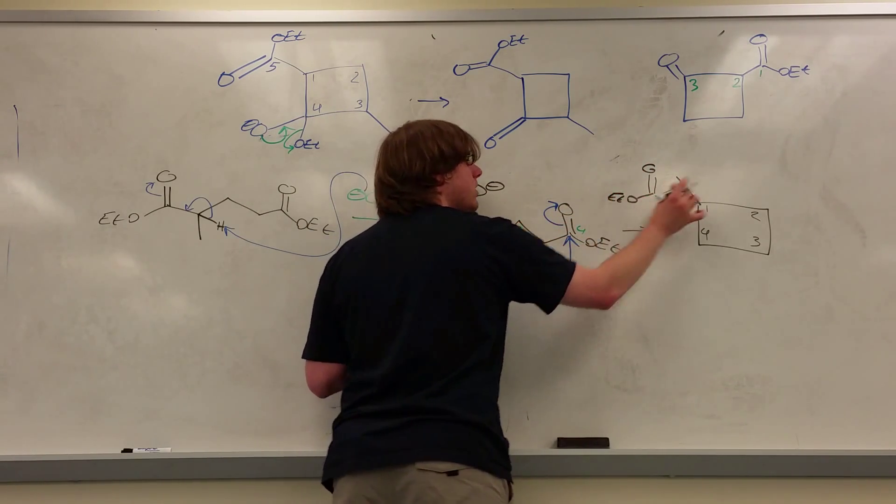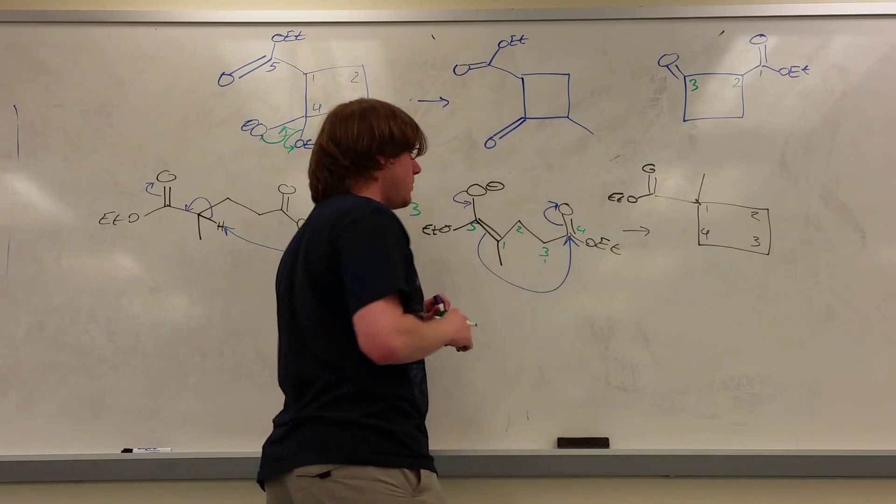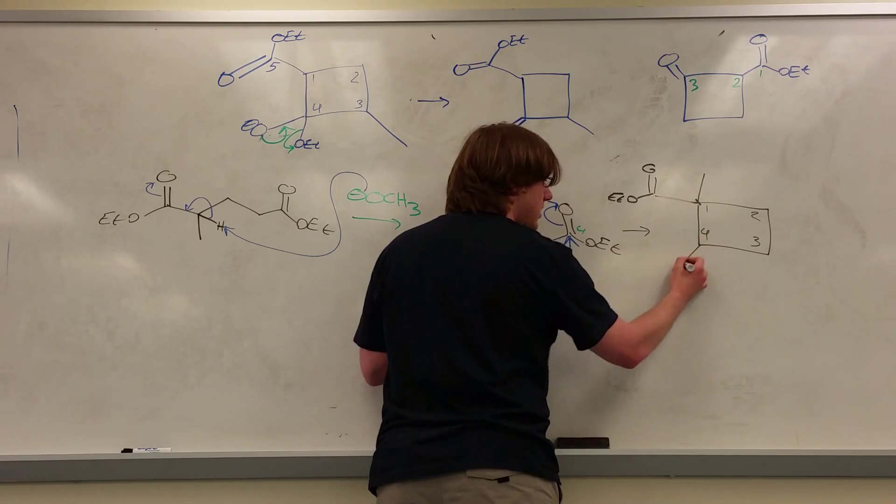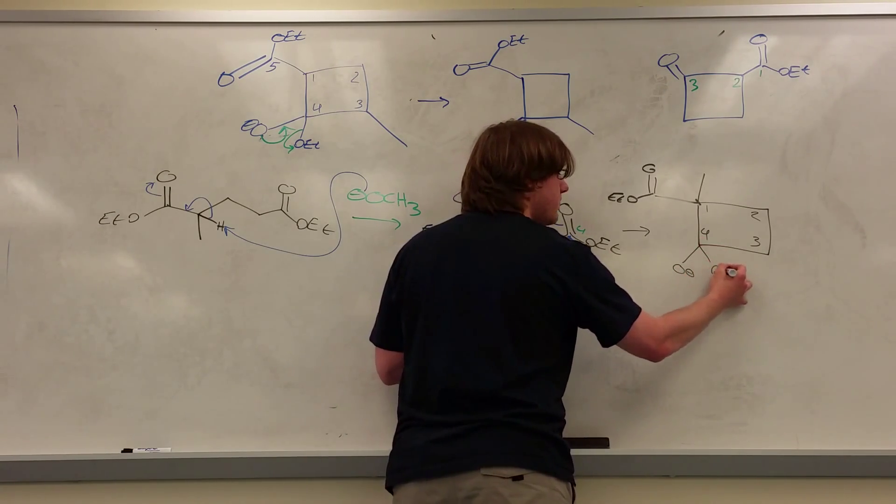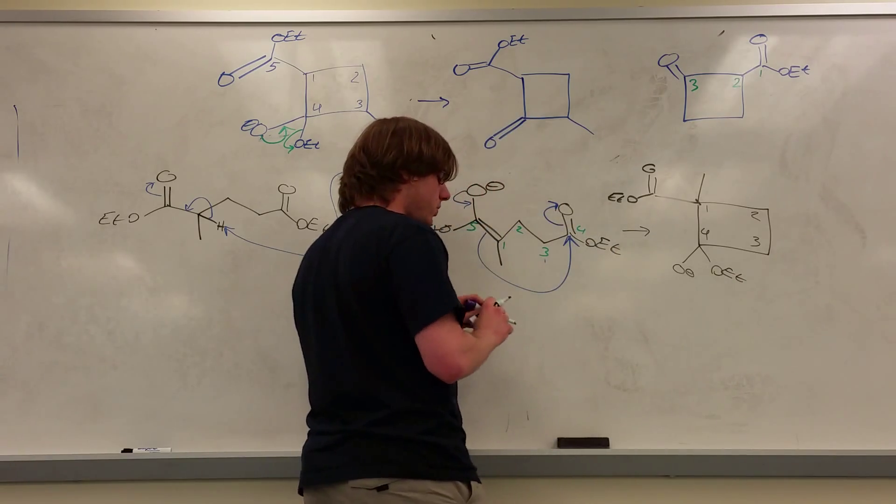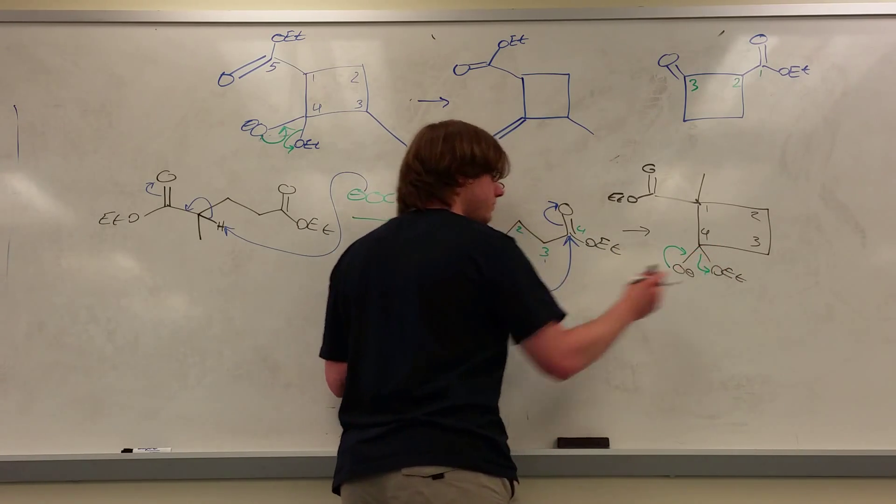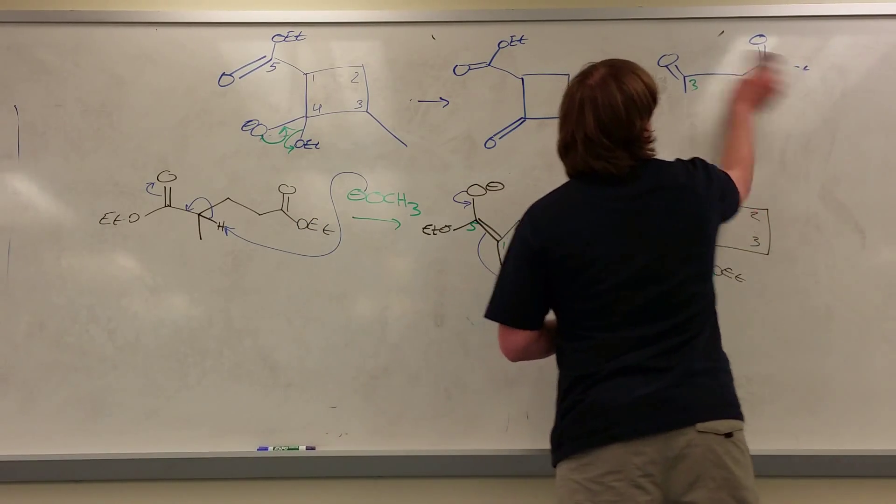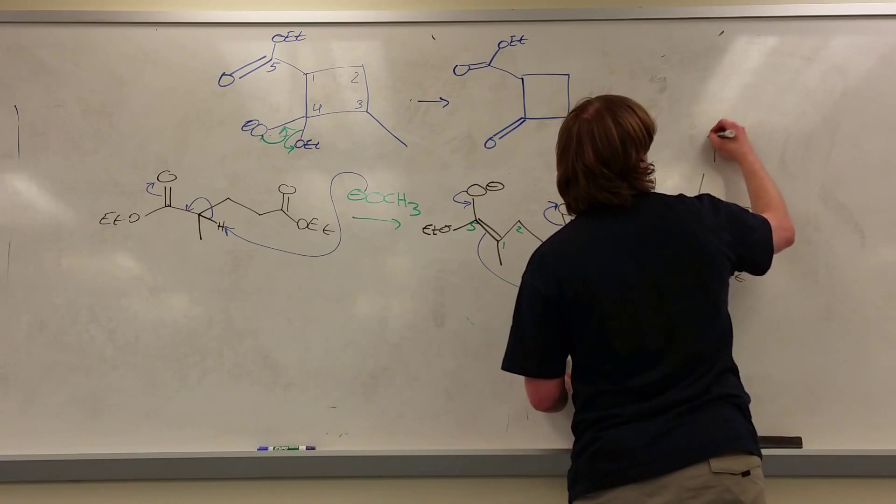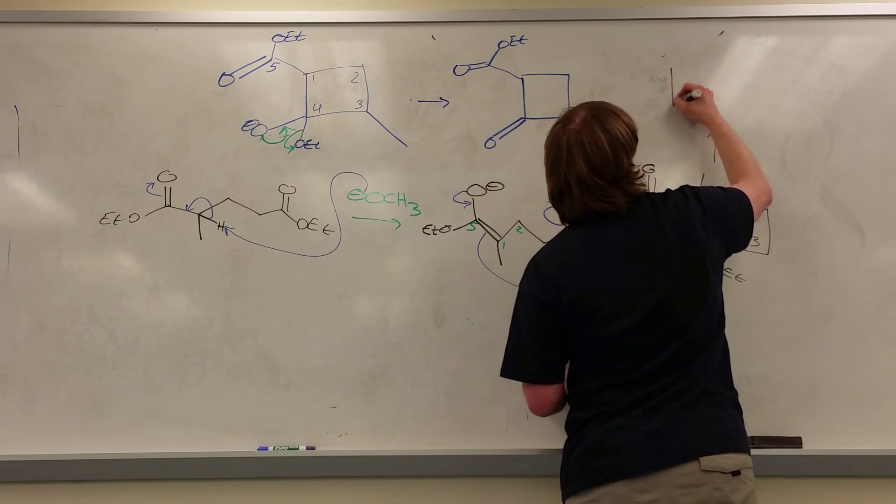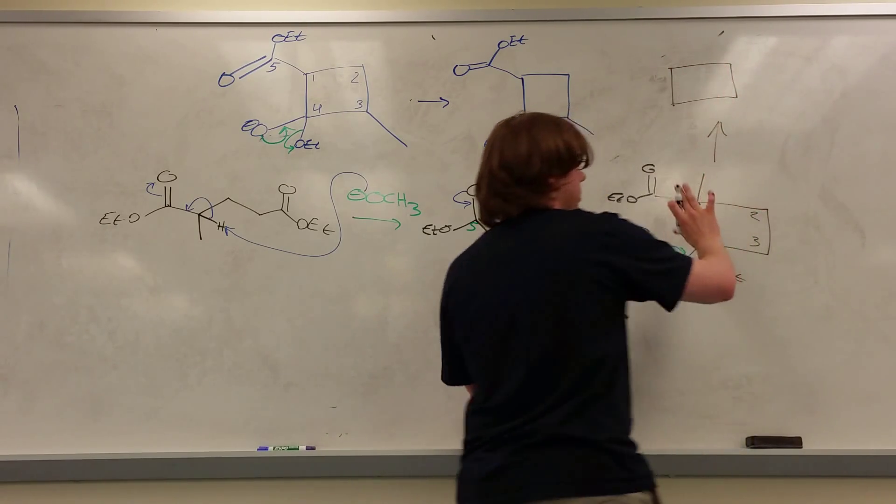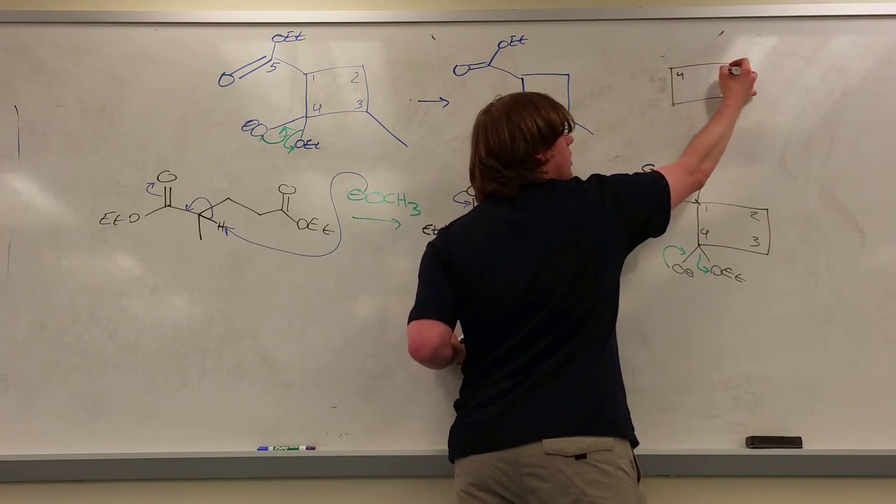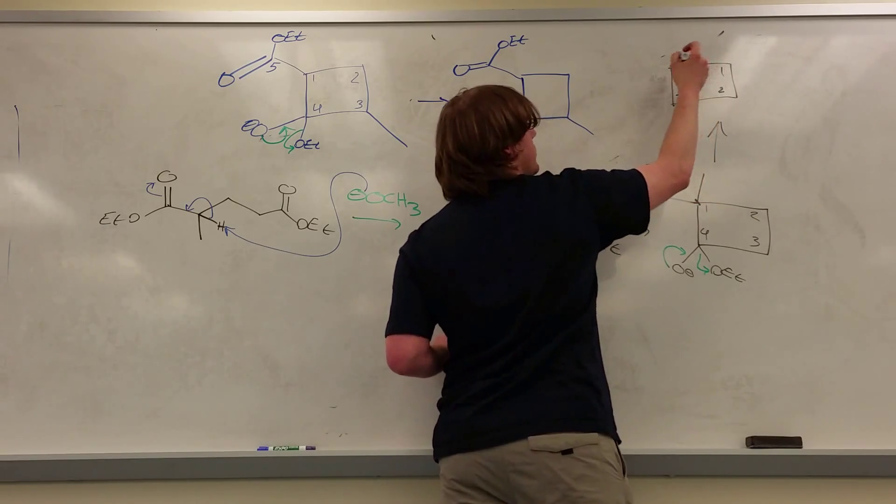I'm going to draw this methyl a little nicer. And carbon four had the oxygen that got attacked, so it has the O- and the OET, and just like before, we'll see that the O- will swing down and kick the OET out. So that would leave me with this is my final product, the four-membered ring, and I'm just going to rotate it again, so carbon four is over here, three, two, one, just so it's easier to visualize.